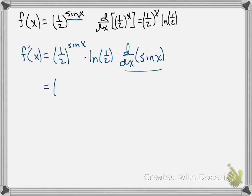And you can move pieces around. It's not going to be a pretty derivative no matter what we do. But we have 1 half to the sine of x times ln of 1 half times the derivative of sine of x, which is cosine x. And there is our derivative.